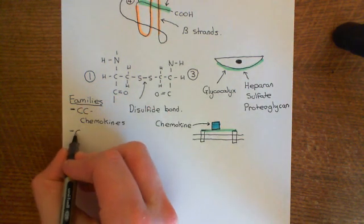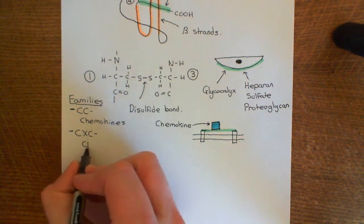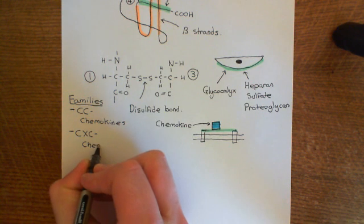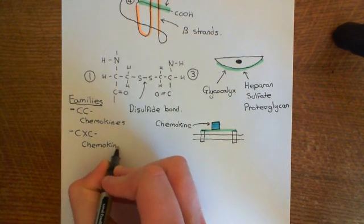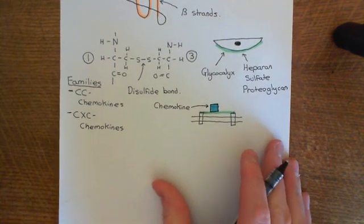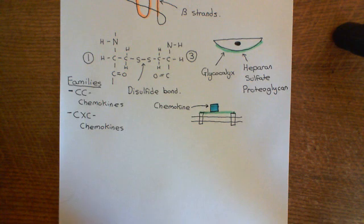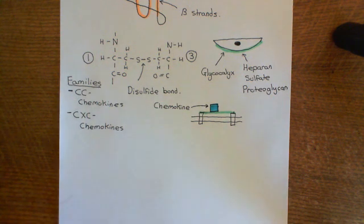The next family is what's known as the CXC chemokines. And these names actually do make incredible sense. These are telling you the positions of those first two cysteine residues with respect to each other. You might like to just anticipate or guess for yourself what CC and CXC mean.